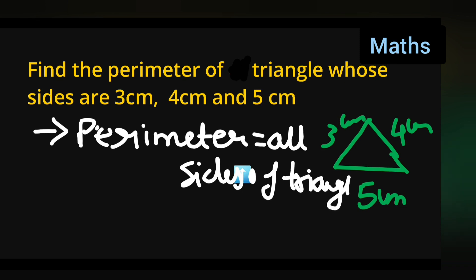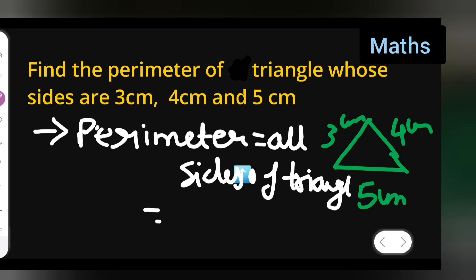Okay, here we are talking about all sides of triangle, right? So all sides mean triangle is having only three sides. So 3 plus 4 plus 5. You'll have to add the numbers 3 centimeter plus 4 centimeter plus 5 centimeter.